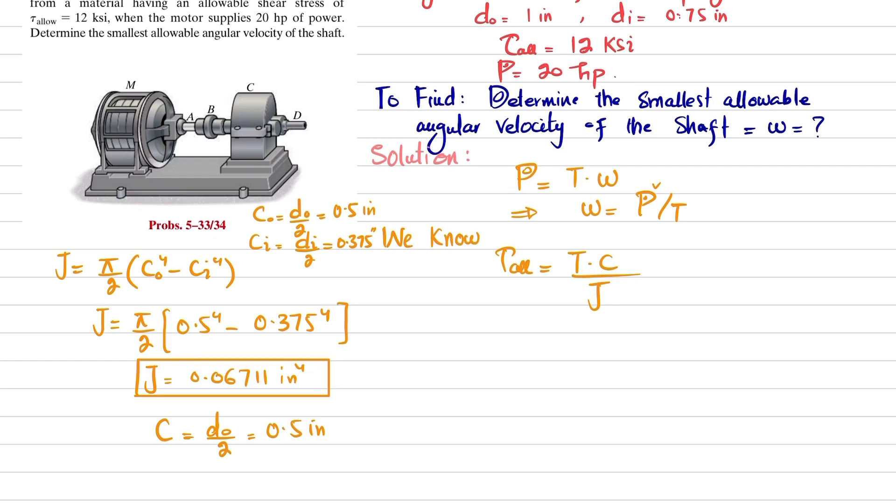Here you have allowable shearing stress which is given as 12 ksi. So 12 times 10 to the power 3 is equal to torque times c is 0.5 divided by J is 0.06711. So from here you will get this torque is equal to 12 times 10 raised to power 3 multiplied by 0.06711 divided by 0.5.